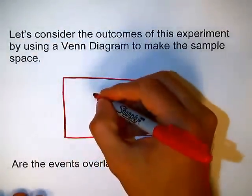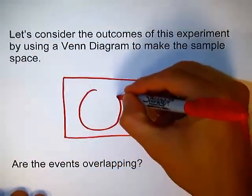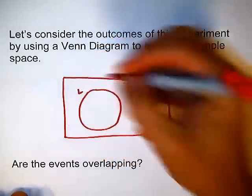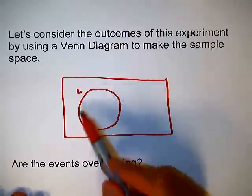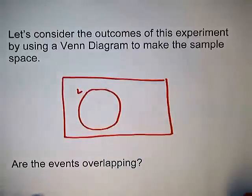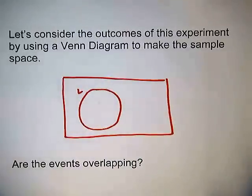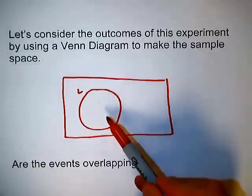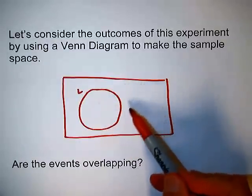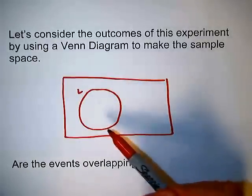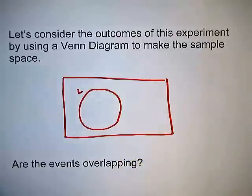If we start with event L, this would represent anybody that makes a left-hand turn. Now, I also want to use a circle to represent event R. So the issue now is, should I make the circles overlapping, or should I keep them separate? Are they overlapping events, or non-overlapping events?